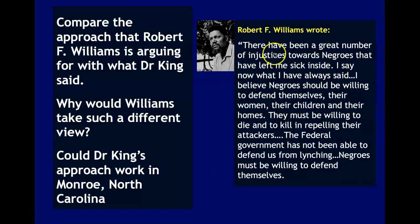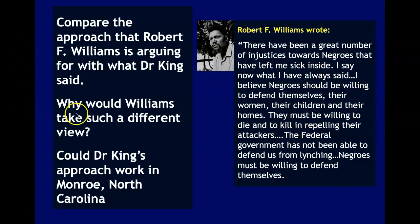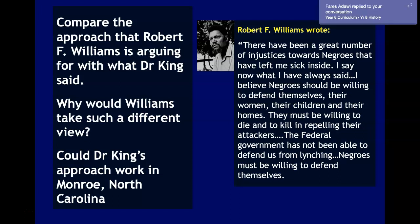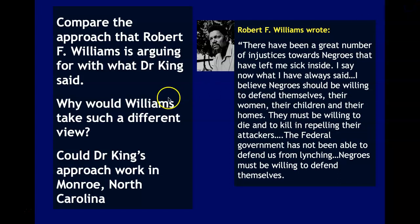Now have a look at Robert F. Williams's philosophy. We're very familiar with the sorts of things that he believed and said. Think about these two questions: why would Williams take such a different view to Martin Luther King? Think back to last lesson, the things he'd witnessed and the sort of environment he inhabited. And then: could Dr. King's approach work in Monroe, North Carolina?